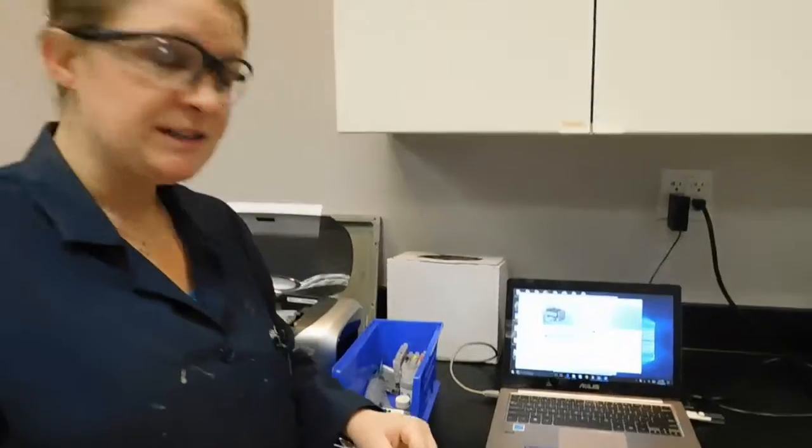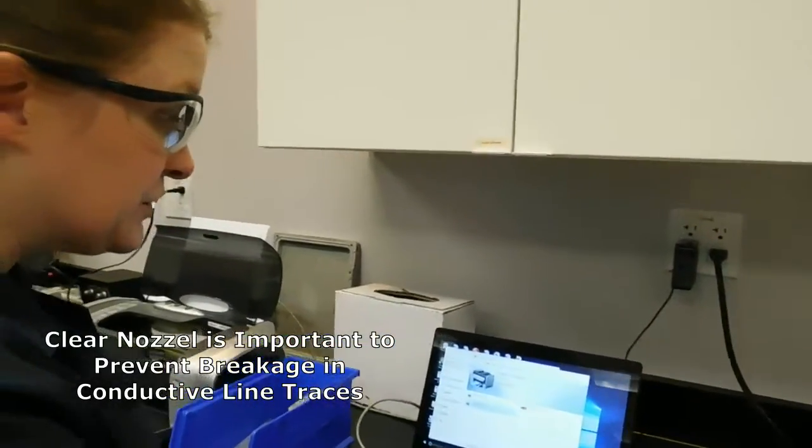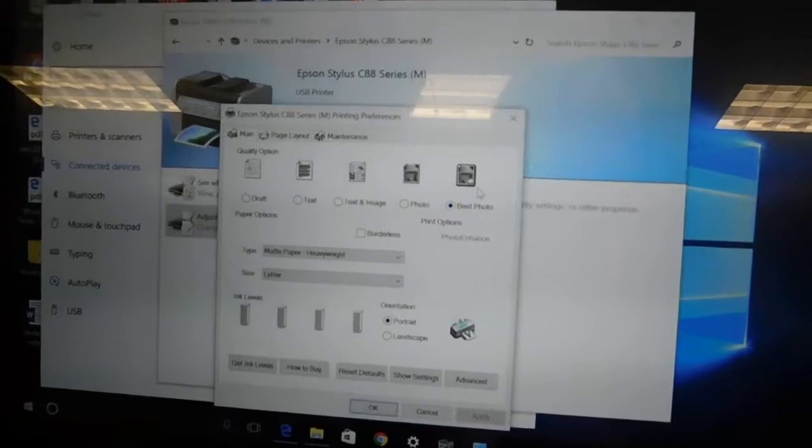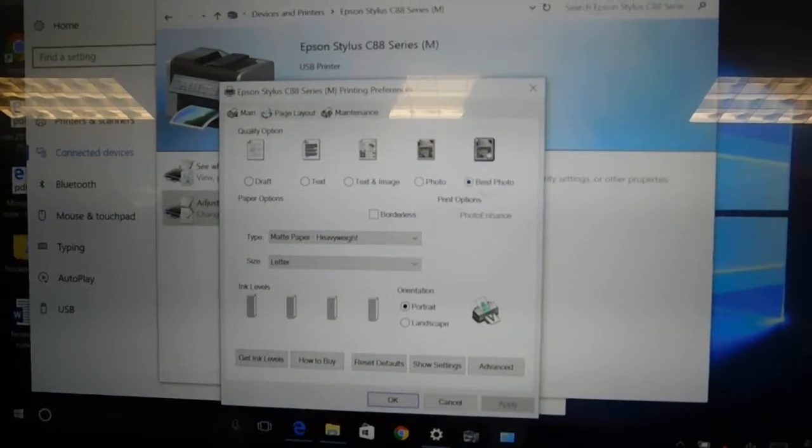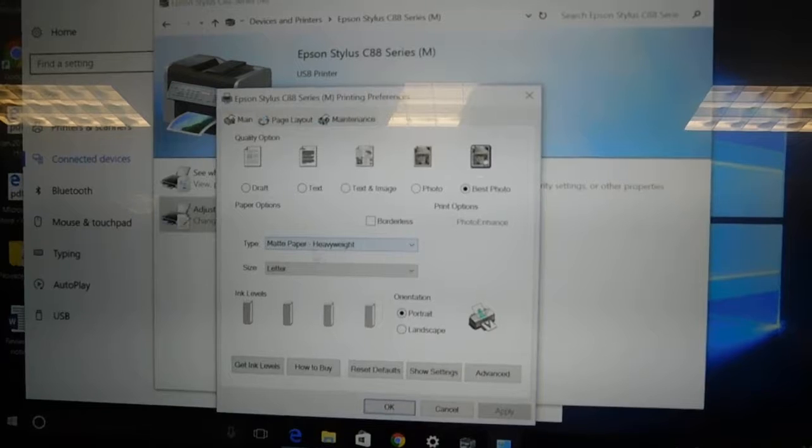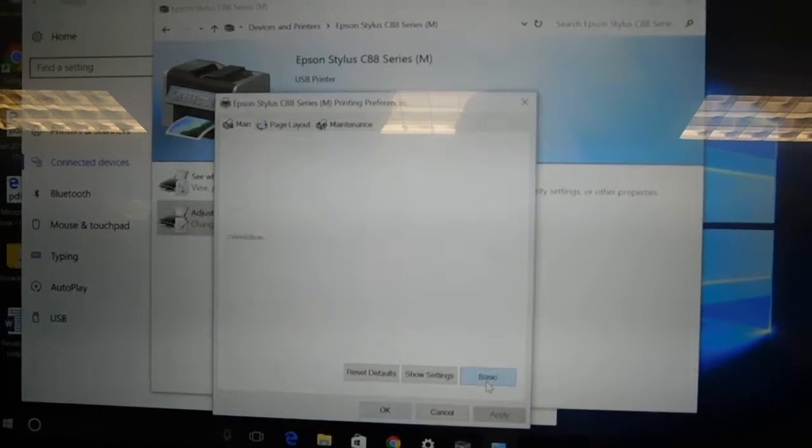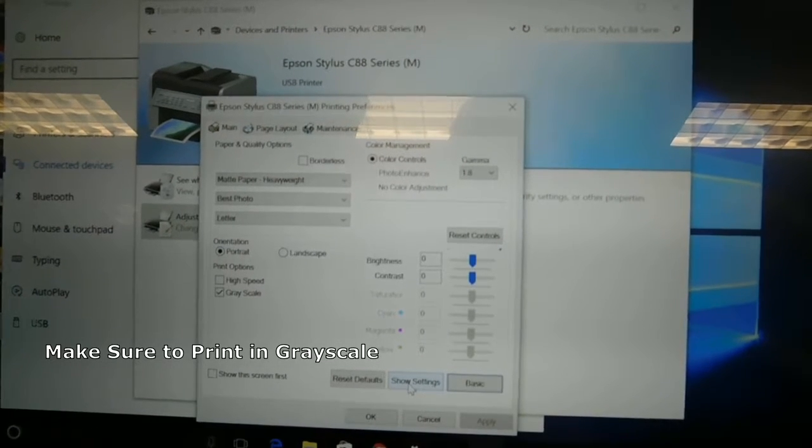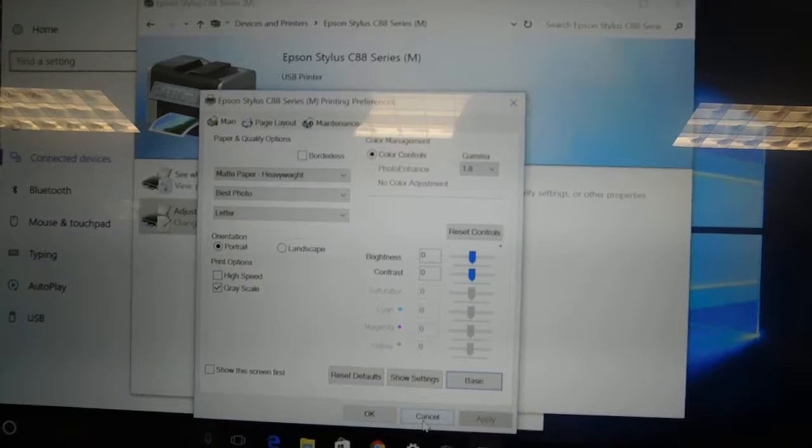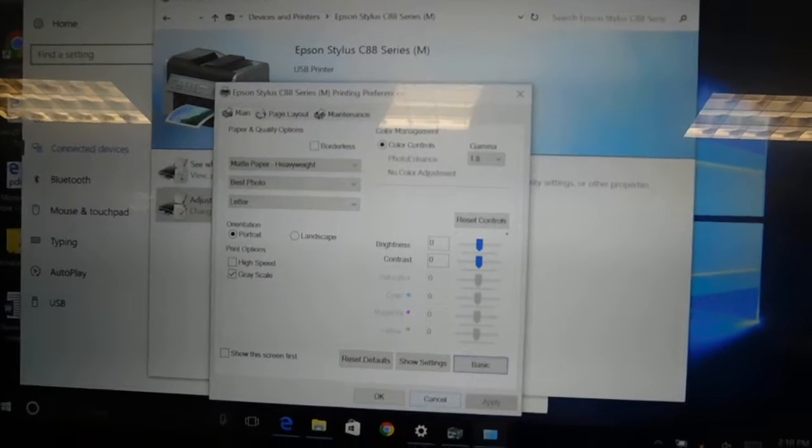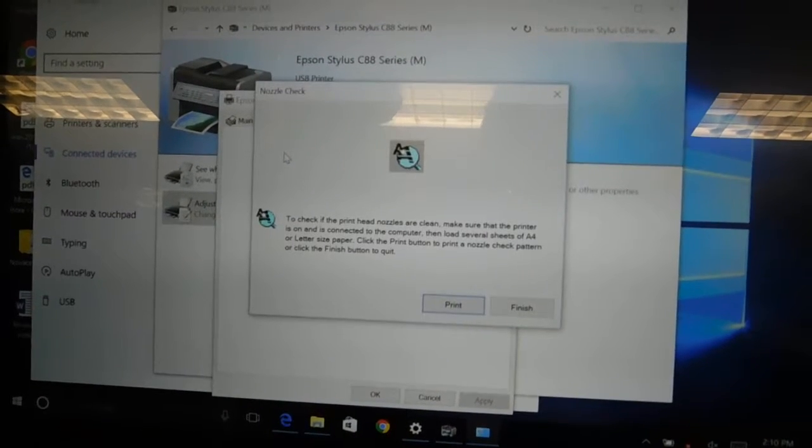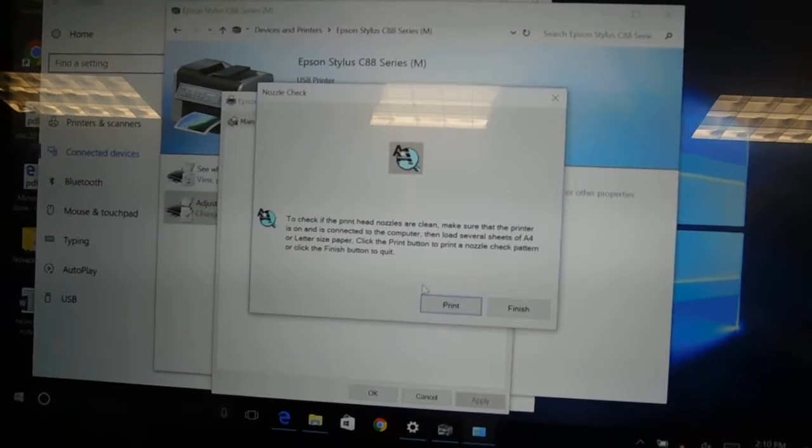First we're going to do a test print to ensure that we have a clear nozzle to print our ink. To do this we use the standard printing options that come with the printer software. We use best photo and matte heavyweight paper and we print on the grayscale only because we don't deploy the cyan, magenta, or yellow cartridges, just the black ink cartridge to print our ink. Now we are going to do a nozzle check using the printer's own software.